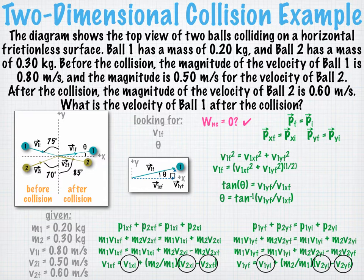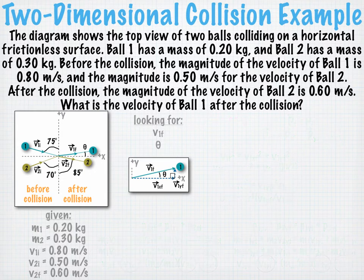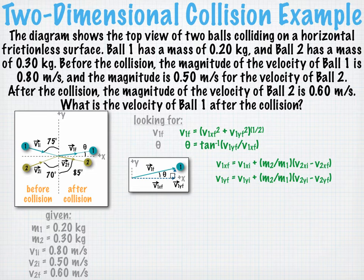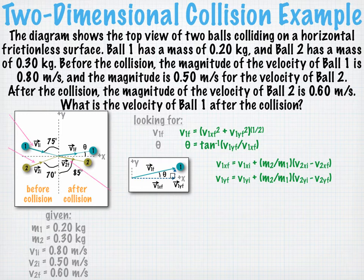As you can see, working this problem requires multiple steps, so let's organize this. Here are the two final equations we hope to solve for our two unknowns, and here are the equations we need to solve in order to get the missing values to plug into our final equations. To solve these equations, we need to find the x and y components of the initial velocity vector of ball one, the initial velocity vector of ball two, and the final velocity vector of ball two. So let's look at each of these individually, starting with v1 initial.